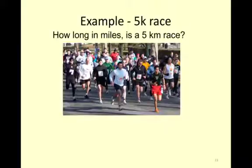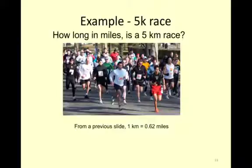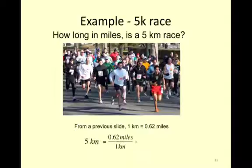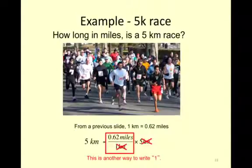Another example: a 5K race — how long is it in miles? 1 kilometer is 0.62 miles. You can divide — take half of 5, which is 2.5, and add 10%, you get roughly 3. It's about 3.1 miles. 5 kilometers times 0.62 miles equals 3.1 miles.